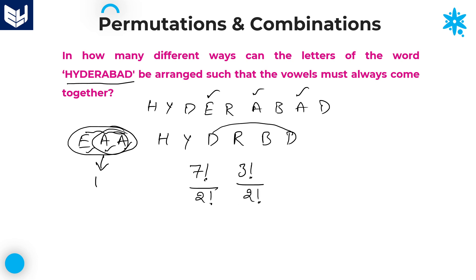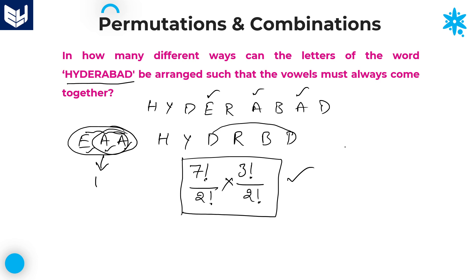The required answer for this question is 7 factorial divided by 2 factorial, multiplied by 3 factorial divided by 2 factorial. I hope you understand all the problems in this session. Thank you very much for watching.